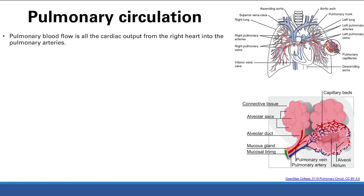In pulmonary circulation, all the blood from the right side of the heart goes to the lungs. It goes into the pulmonary arteries, which branch out following the bronchi. These arteries branch out smaller and smaller, just like bronchi branch into bronchioles, eventually reaching the alveoli where they form pulmonary capillary beds — a dense network surrounding the alveoli that optimizes gas exchange between the alveoli and the blood vessels.